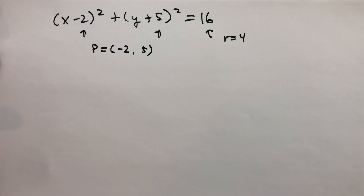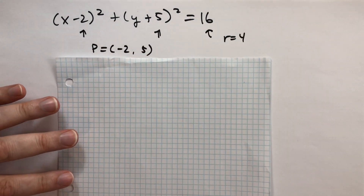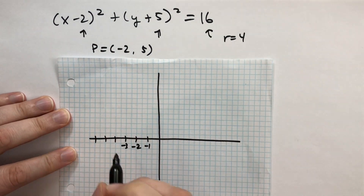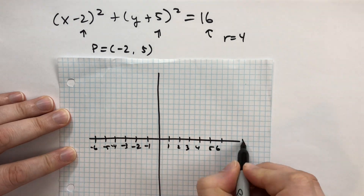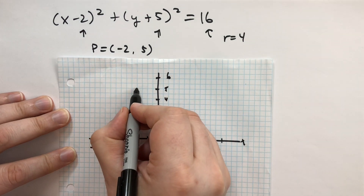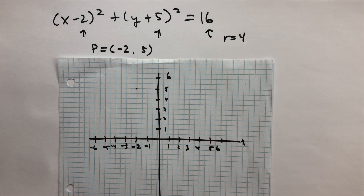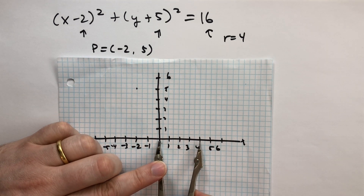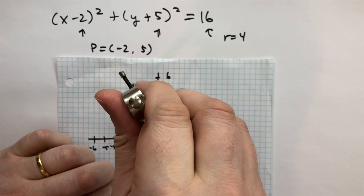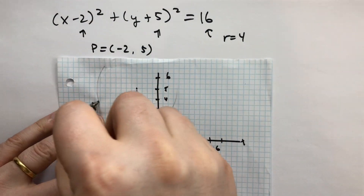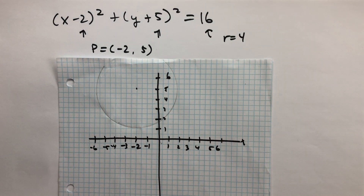So I can take a piece of paper here and draw the equation. Let's change this — so the center of the circle is at the appropriate point. If we take the radius to be 4 units, I'll take my compass and adjust it until it's 4 units long. That's about 4 units right there — and this is the circle that equation describes.